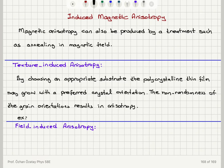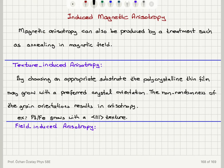A good example: if we grow iron on platinum, it is going to grow with a 1-1-1 texture — that is, texture along the body diagonal.